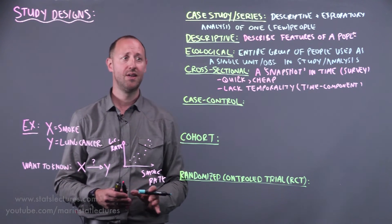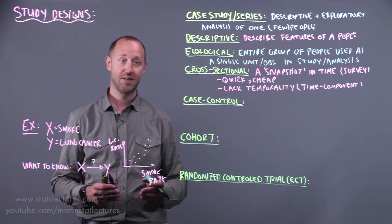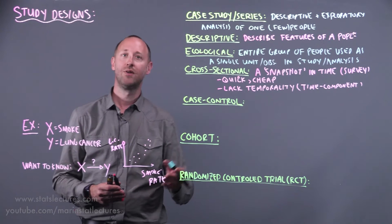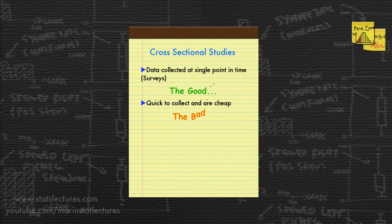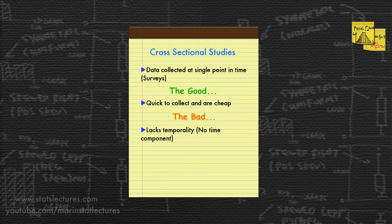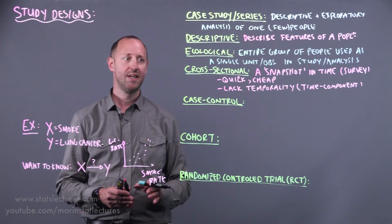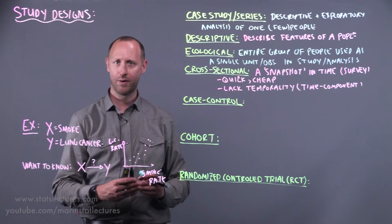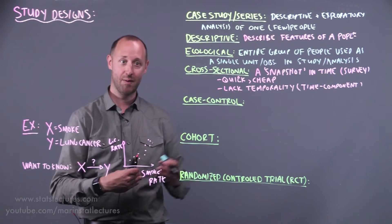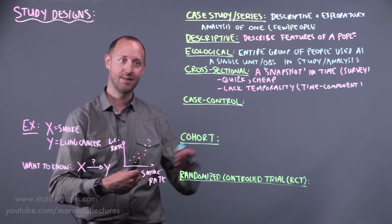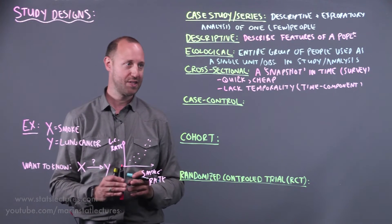In this cross-sectional study, we might amongst other things ask people: do they smoke? Yes or no, or some measure of how much. Do they have lung cancer? Yes or no. Some of the negatives about this design is it lacks temporality. There's no time component, which means we don't know which came first. Did the person smoke and then develop lung cancer, or did they get lung cancer and smoke after? How much time was there in between? All this is missing.